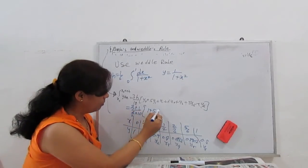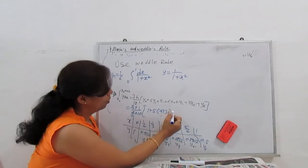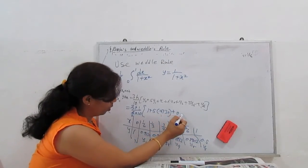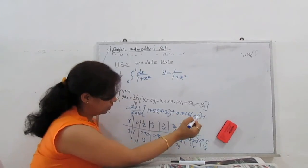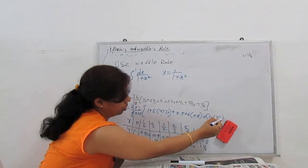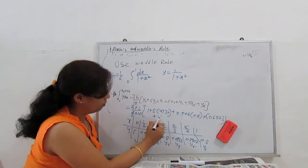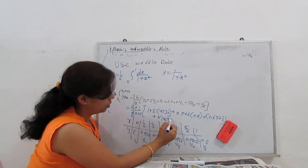1 plus 5 times 0.9730 plus 0.9 plus 6 times 0.8 plus 0.6923 plus 5 times 0.5902.